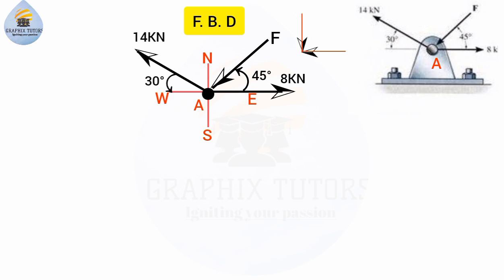The force is acting inward, so I'll put my arrows at the North and East ends. Since the force is inclined at 45 degrees to the horizontal, my vertical component (y-axis) will be sine and the horizontal component will be cosine. If it were inclined to the vertical, it would be reversed — vertical would be cosine and horizontal would be sine. So the vertical component gives F sin 45 and the horizontal gives F cos 45. That is for the inclined force F.